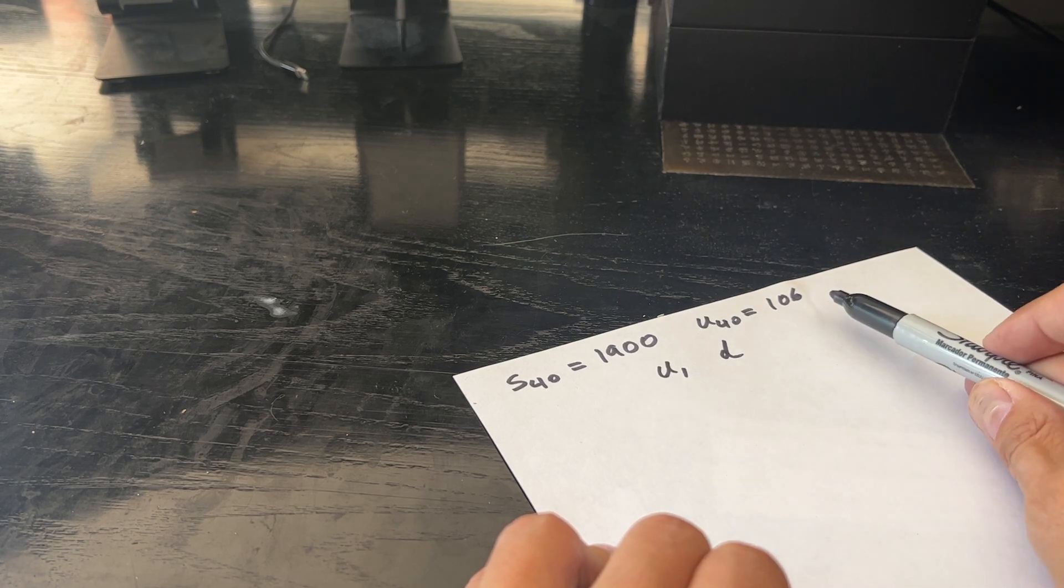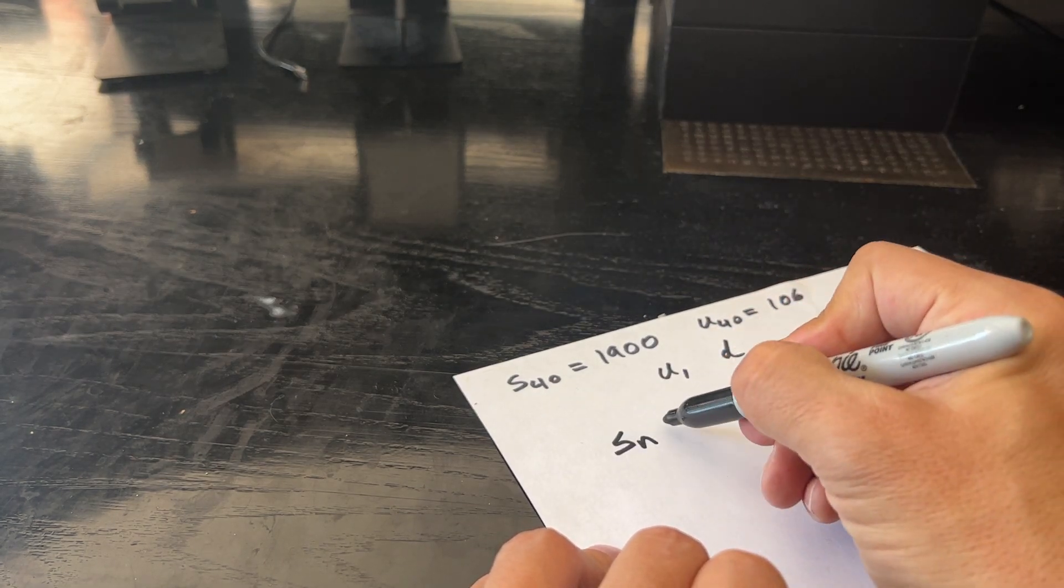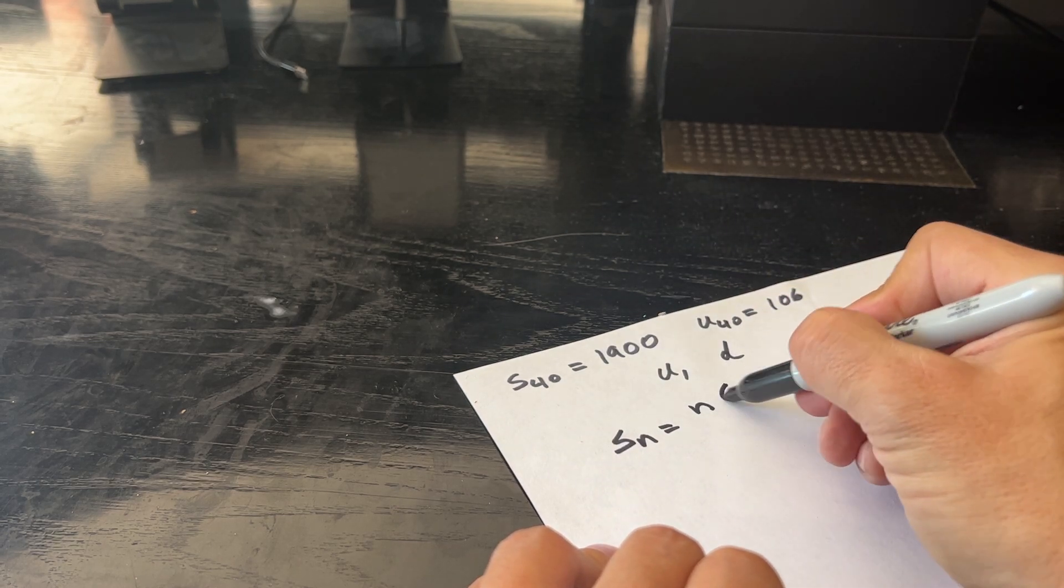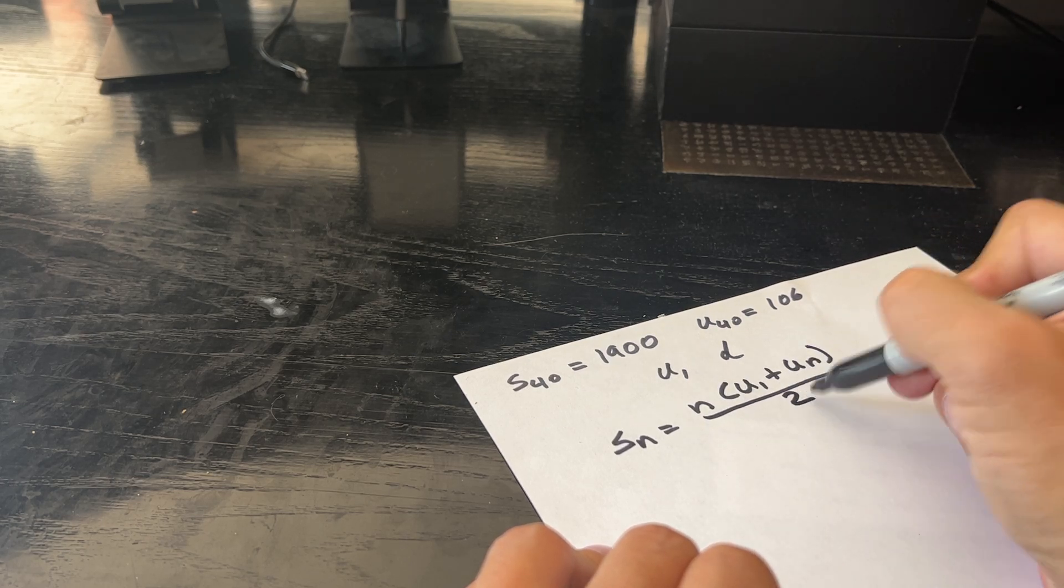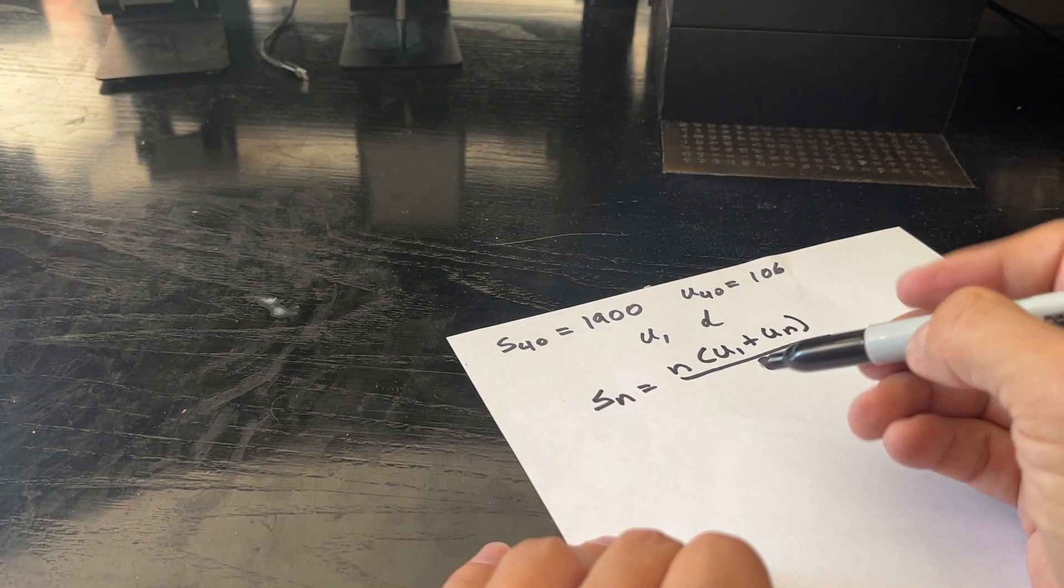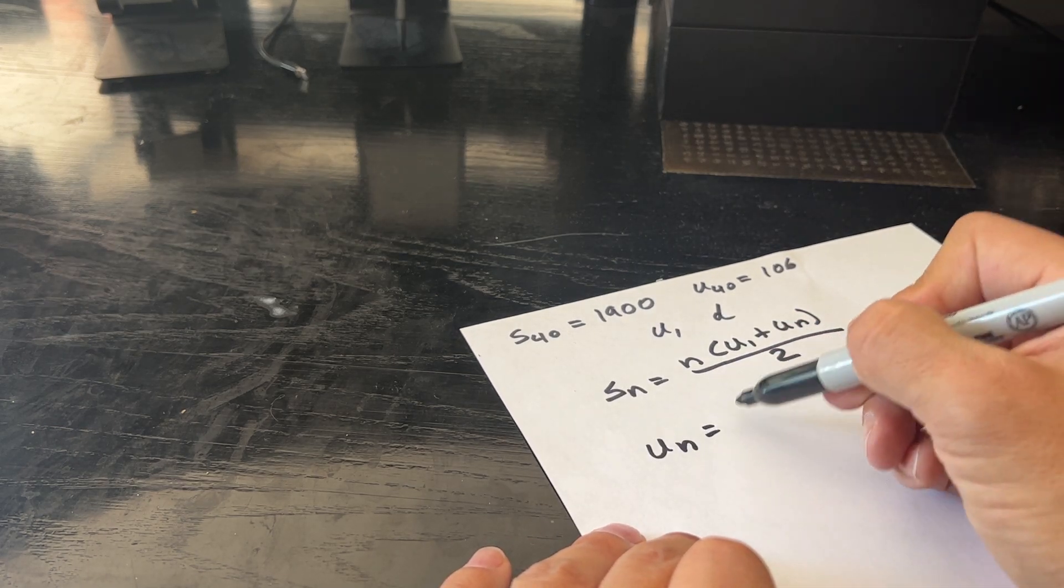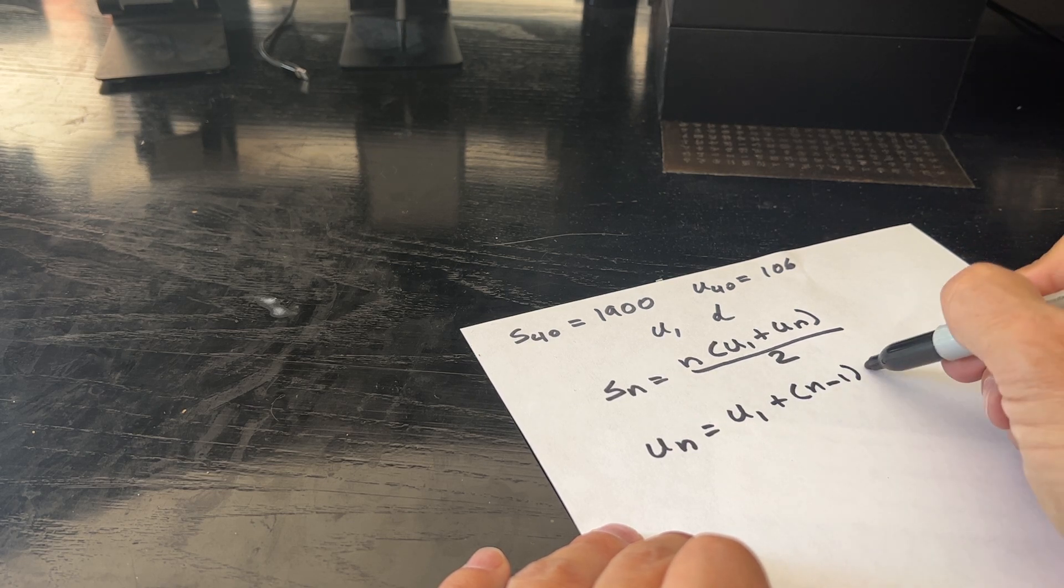So we have S40 and we have U40. The first formula is that Sn, in this case N is 40, equals N times U1 plus Un over 2. So the second formula we're going to use here is that Un equals U1 plus N minus 1 times D.